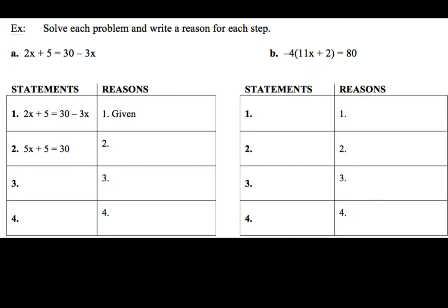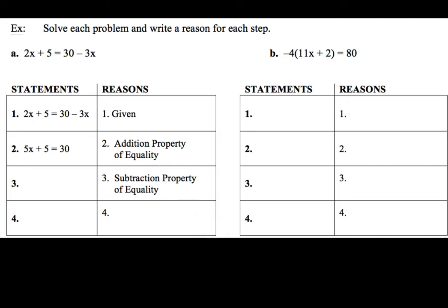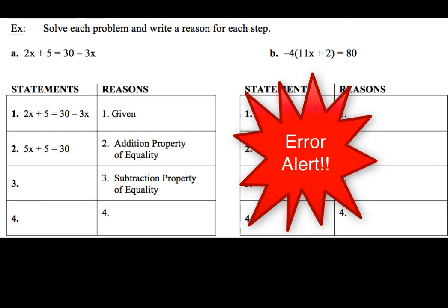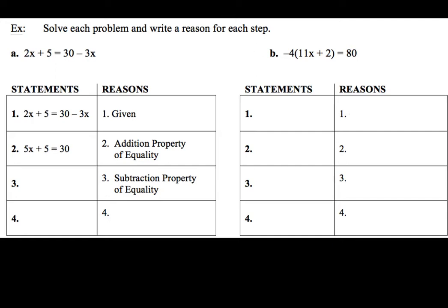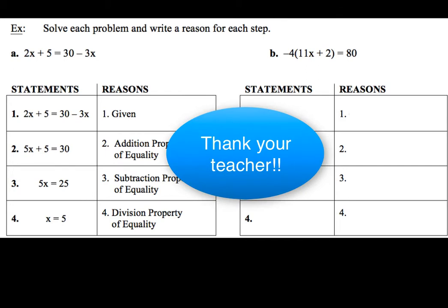Now if I added 3x to both sides, that's going to be the addition property of equality. Taking a look at what I have — 5x plus 5 equals 30 — I'm going to subtract 5 from both sides, which means I'm going to be using the subtraction property of equality. Please be sure that you add 'of equality' on there. Don't just write 'addition property' — make sure you write the full name. When we do that, we will end up with 5x equals 25. And then lastly, we're going to divide both sides by 5 using the division property of equality to come up with x equals 5. This is really your first step into formalizing a proof. Some of you may have done this in Algebra 1 — if your teacher made you do this, go back and thank them, because it's going to make things easier for you down the road.